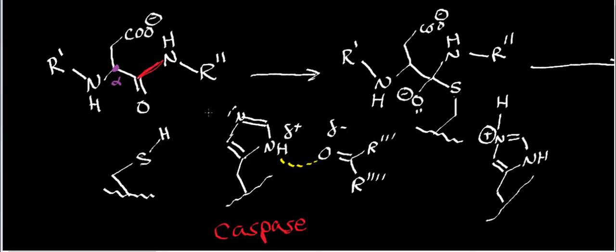The first step of the mechanism is deprotonation of the cysteine residue. As soon as it gets deprotonated, the electrons between the proton and the sulfur atom attack this carbonyl carbon right here. That forces the pi electrons onto the carbonyl oxygen, and what you end up generating is a tetrahedral intermediate. When you start with a trigonal planar complex and do a nucleophilic acyl substitution — which is what this is — your intermediate is always termed a tetrahedral intermediate. Attacking the carbonyl gives you a negatively charged oxygen.